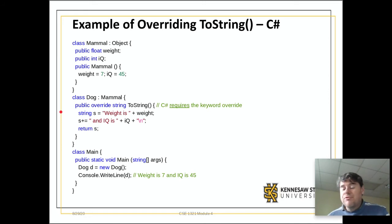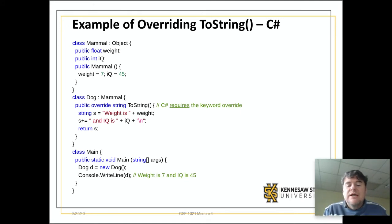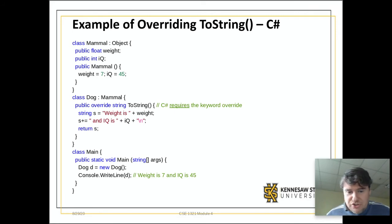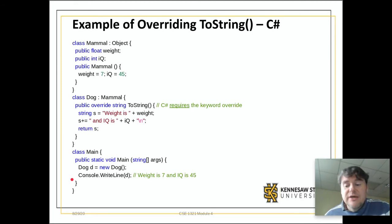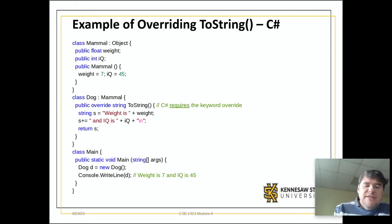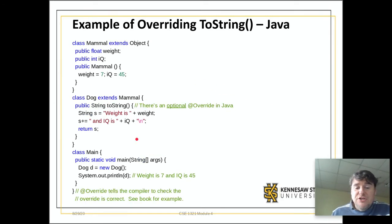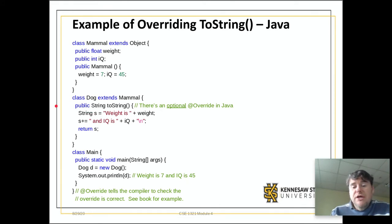To be clear, toString should never print anything. It is, as its name suggests, a method that returns a string representing the object. You do not call print in there—you just return a string. It's up to the calling method to do the printing. In Java, when you do public string toString, you should optionally write @Override above it—you should get in the habit of writing it.